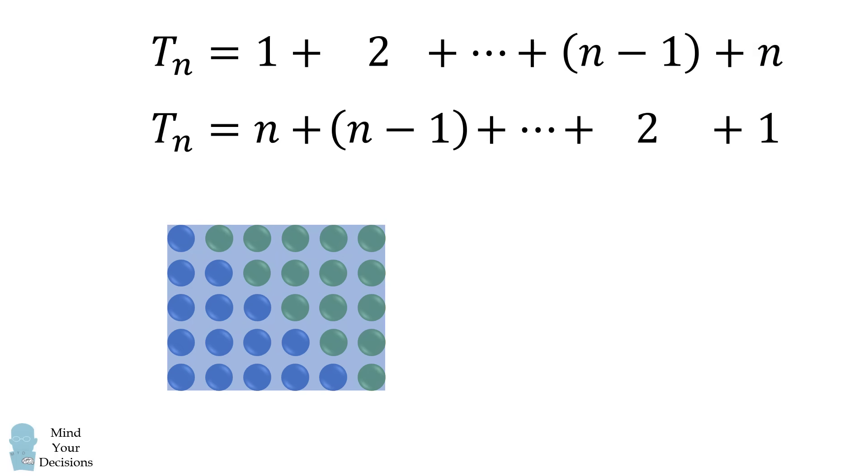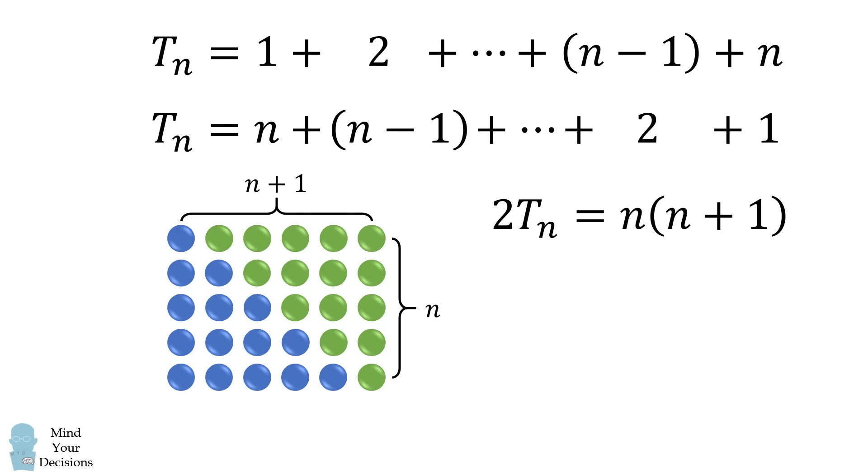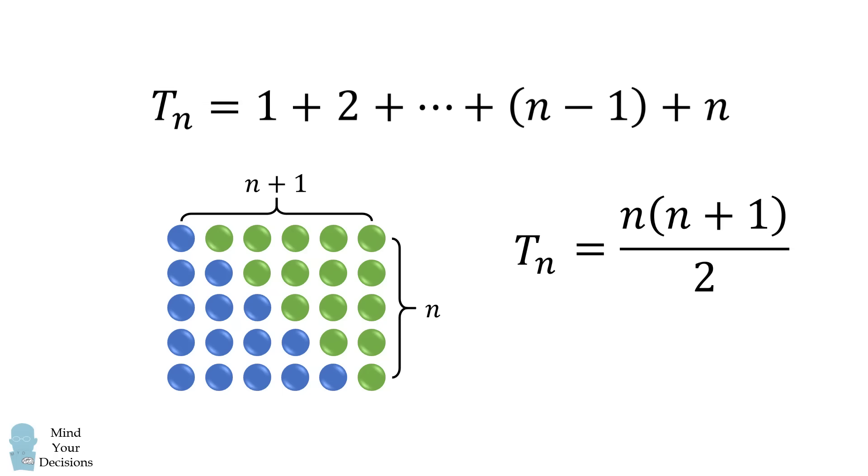This is visualized in the following rectangular grid. Every single row has a value of n plus 1 dots, and there are a total of n rows. Therefore, 2 times tn is equal to n multiplied by n plus 1. We can divide both sides of this equation by 2 to get the famous formula that tn is equal to n multiplied by n plus 1 all over 2.